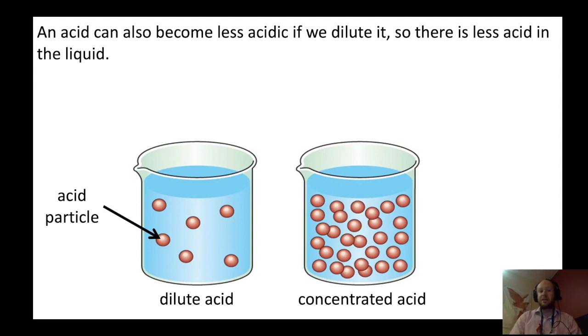Another way that acids can become more or less acidic is by doing concentration or dilution. If you dilute something, you're putting more water into the solution so that there are less acid particles there. If you look at the diagram below, you can see in my concentrated acid that there are lots and lots of acid particles in it.